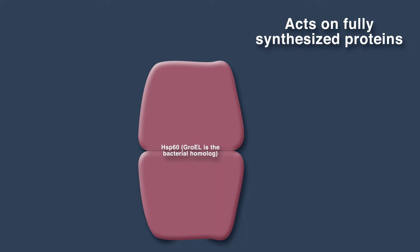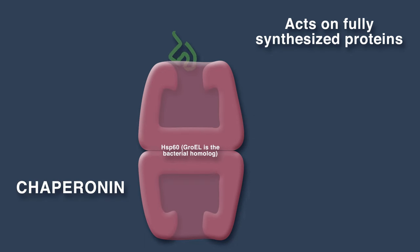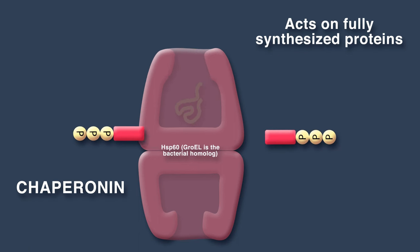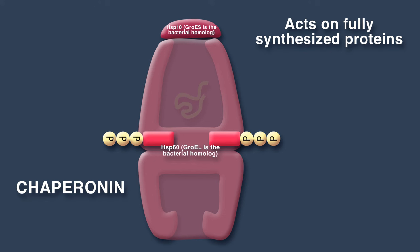Hsp60 acts on fully synthesized proteins, forming a large barrel that serves to isolate the protein and provide better conditions for folding. Hsp60, which is a type of molecular chaperone called a chaperonin, initially captures proteins along the rim of one of its barrels. Then, the binding of ATP and a protein cap increases the diameter of the barrel and partly unfolds the protein. Inside the barrel, the protein has a chance to fold in a more favorable environment.